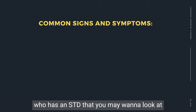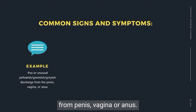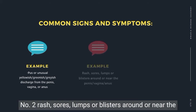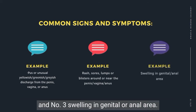Here are some common signs and symptoms of a person who has an STD. Number one: pus or unusual yellowish, greenish, or grayish discharge from the penis, vagina, or anus. Number two: rash, sores, lumps, or blisters around or near the penis, vagina, or anus. Number three: swelling in the genital or anal area.